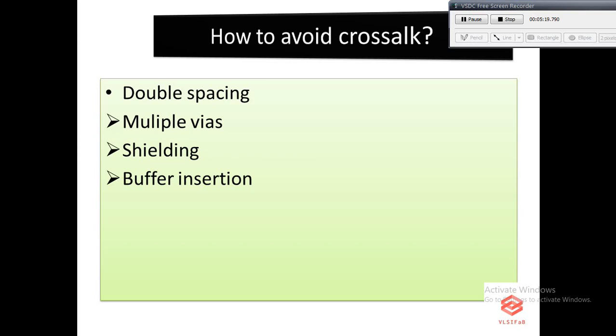Shielding: as feature sizes are decreased to deep submicron dimensions, coupling capacitance can significantly affect circuit performance due to the decreased interconnect spacing and increased interconnect thickness.